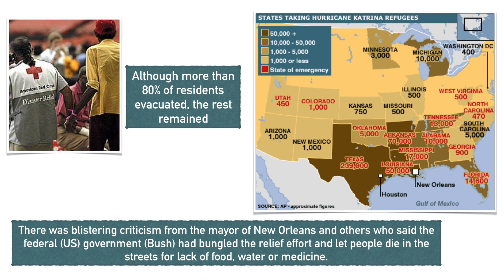Although 80% of residents were eventually evacuated, many remained, and you can see that many refugees took refuge in surrounding states around Louisiana. There was a lot of criticism for the response that the President and the government made to alleviate the effects of Hurricane Katrina.